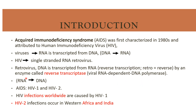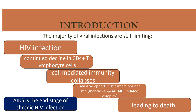DNA is formed from RNA in HIV virus. AIDS involves two types: HIV-1 and HIV-2. HIV-1 infection is worldwide, whereas HIV-2 infection occurs in Western Africa and India. Majority of viral infections are self-limiting, but in HIV, whenever infection occurs it causes continued declining of CD4 T-lymphocyte cells, cell-mediated immunity collapses, massive opportunistic infections and malignancies appear, leading to death. AIDS is the end stage of chronic HIV infection.